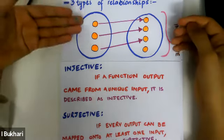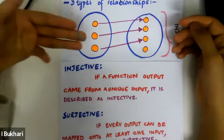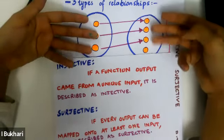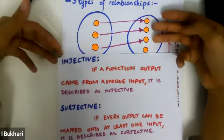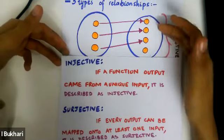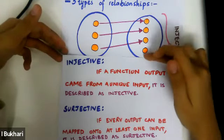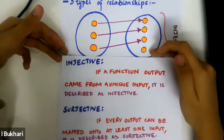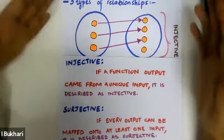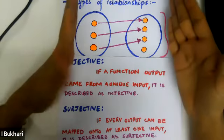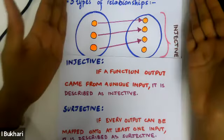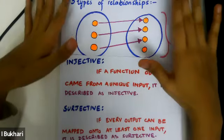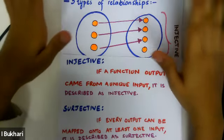With injective, you can see we have used three unique inputs to give us exactly three unique outputs. One element was left behind and wasn't actually mapped to an output. So it is relating the two sets, just not in a complete way.